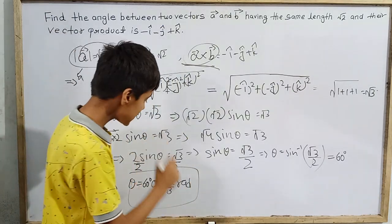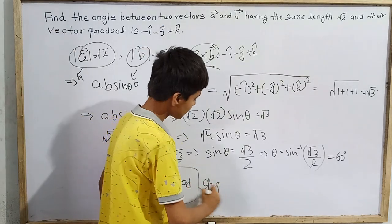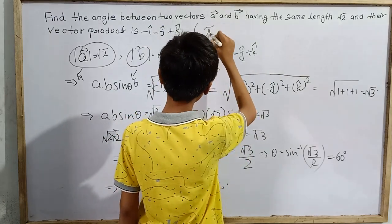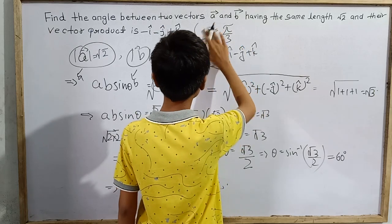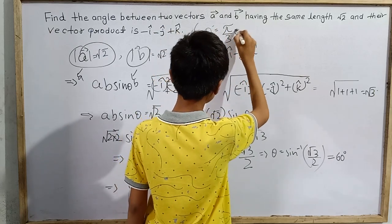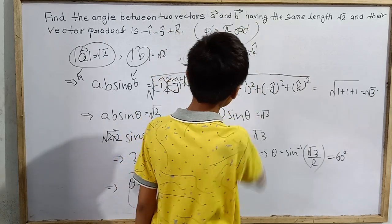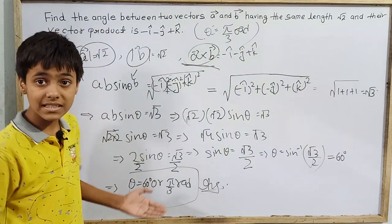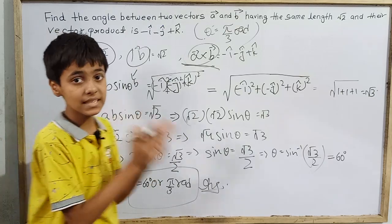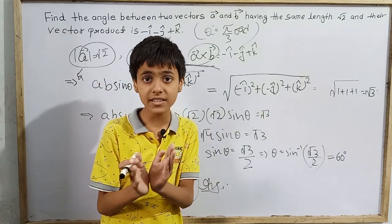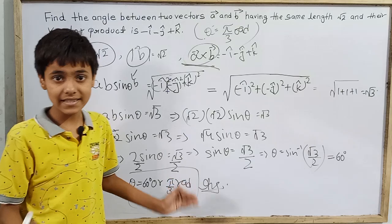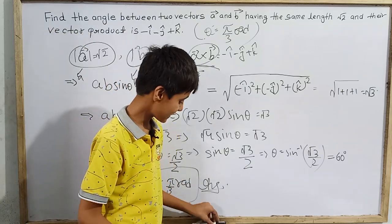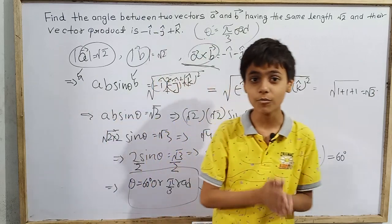Both 60 degrees and π/3 radians are correct — they have the same value. In SI units, θ = π/3 radians is our final correct answer. The question is quite simple; hope you liked it.